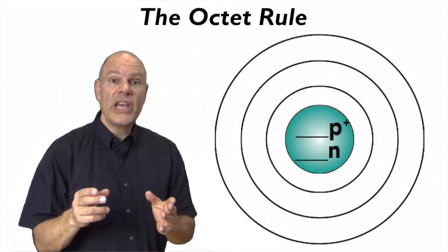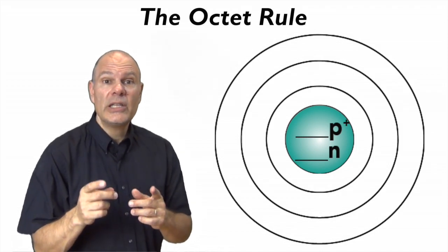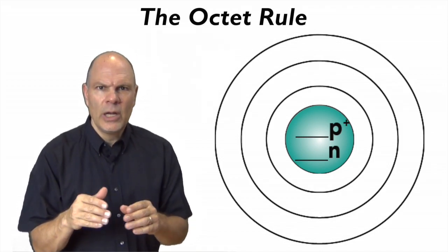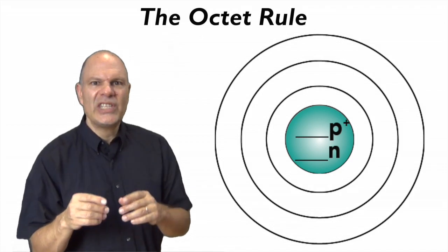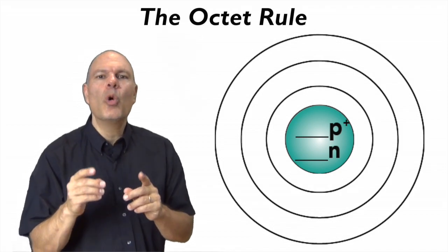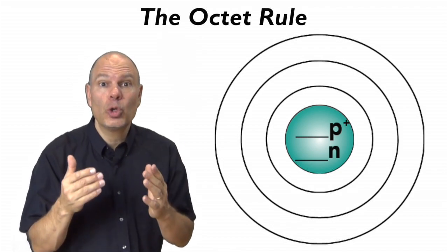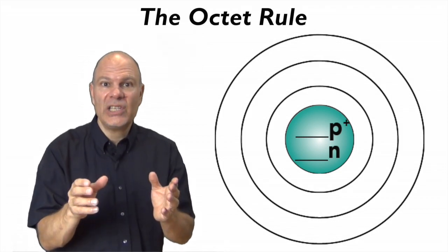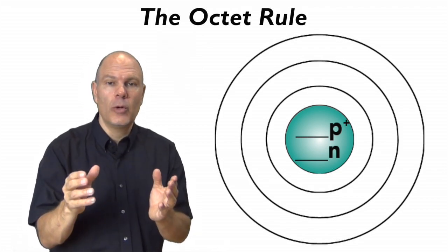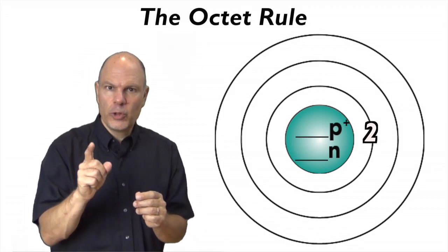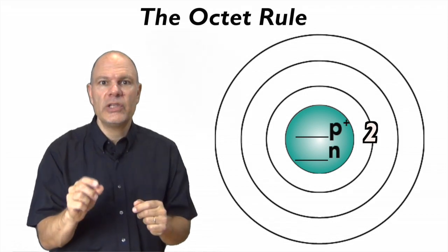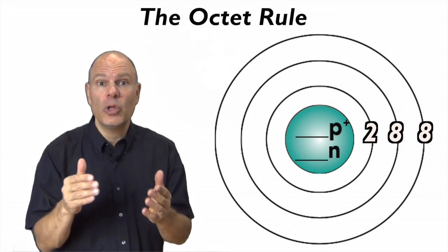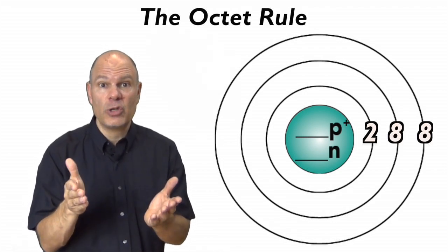The first rule is the octet rule, which we learned about in the context of drawing atoms. In terms of chemical bonding, what this means is that atoms are only happy when their outer orbitals are full. The first orbital can hold up to two electrons, the second can hold up to eight, and the third also can hold up to eight electrons.